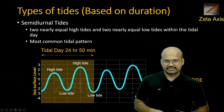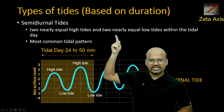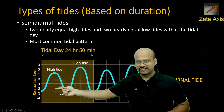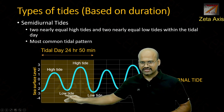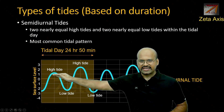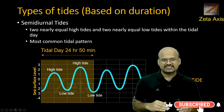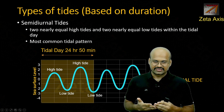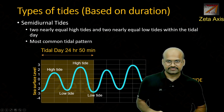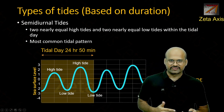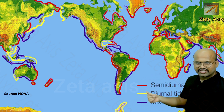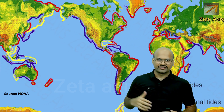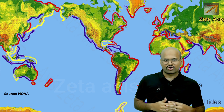Next are semi-diurnal tides. Here we have two nearly equal high tides and two nearly equal low tides within the tidal day — the sea level rises twice and decreases twice, with heights that are approximately the same. When the high tides and low tides are of approximately equal depth, it is called semi-diurnal tide, and this is the most common tidal pattern seen across the world, indicated in red on the map.